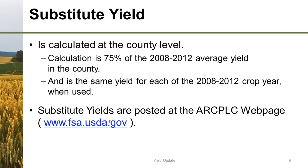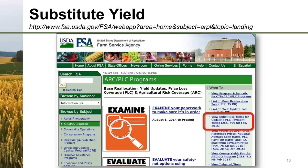The substitute yields are posted at the ARC-PLC webpage on FSA's main website. There's a lot of information on that webpage and I'd encourage you to go take a look. Additional information is being posted there periodically. The URL to find substitute yields is listed here. On the webpage there's a link that says 'View substitute yields for updating PLC yields,' along with a whole bunch of other links that might be of interest.